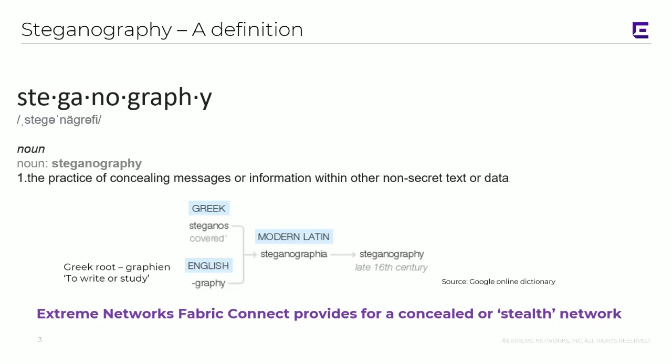Steganography is a fairly old term — late 16th century — and it has Greek roots. Basically, the concept is that you're taking text or some sort of information and you're hiding it.